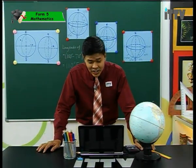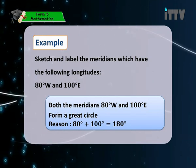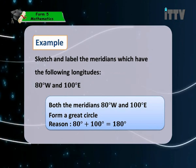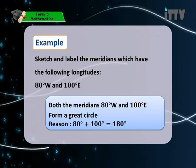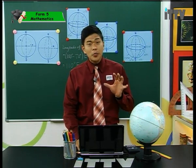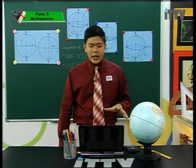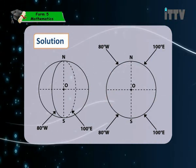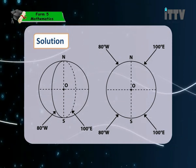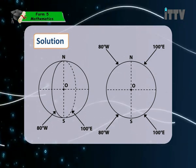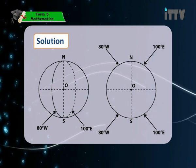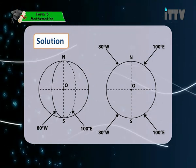Next example: sketch and label the meridians with longitudes 80 degrees west and 100 degrees east. Both meridians form a great circle because 80 plus 100 equals 180 degrees. When sketched, they must be on totally opposite sides of the earth. You can show 80 degrees west on the front and 100 degrees east using dotted lines at the back, or show both sides of the earth with each meridian labeled on its respective side.